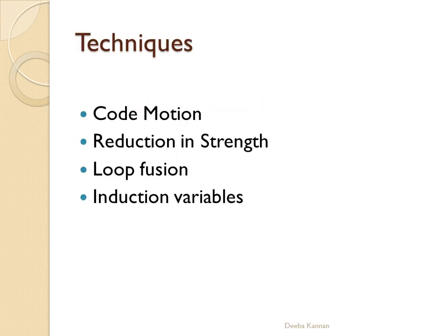These are the techniques covered in loop optimization: the first one is code motion, the second is reduction in strength, the third is loop fusion, and the last one is induction variables.